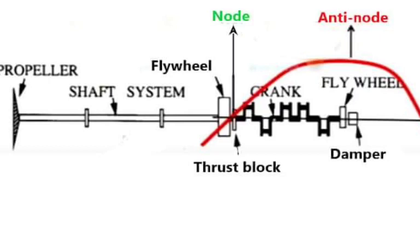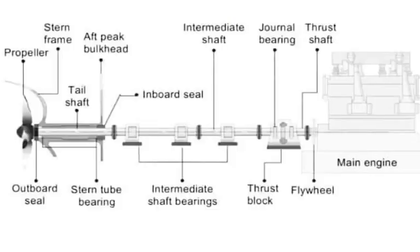Thrust blocks are fitted within the engine or outside the engine at the nearest nodal points. At the end of the crankshaft, the chain or gear drive for the camshaft is also located at or near nodal points. If the drive is taken from a nodal point, the turning moment is even, which is desirable as it prevents undue stress from being developed in the chain drive or gear drive system.